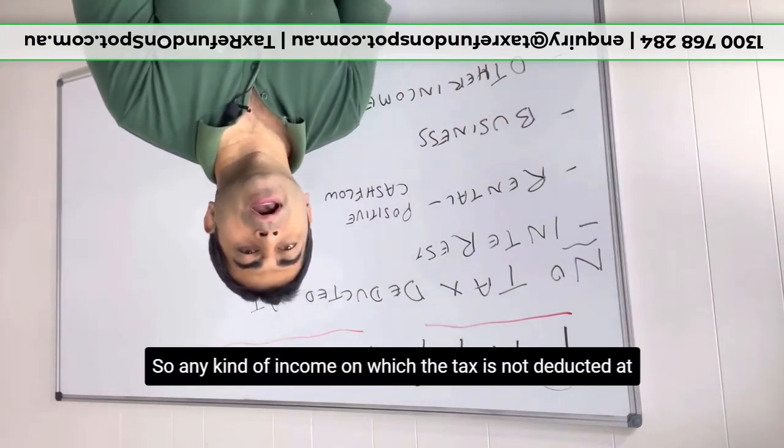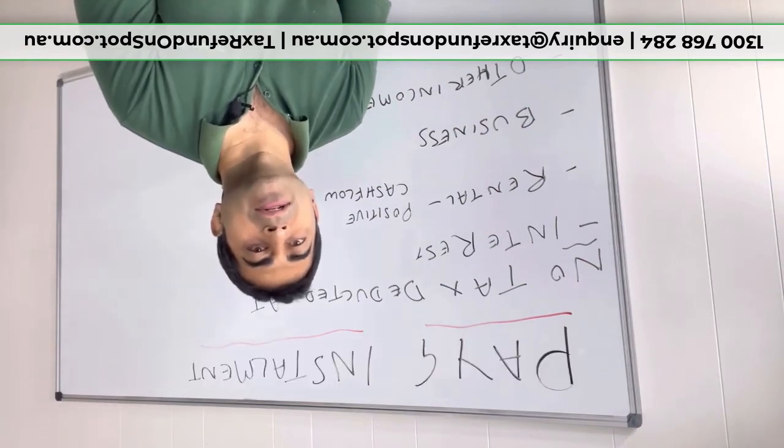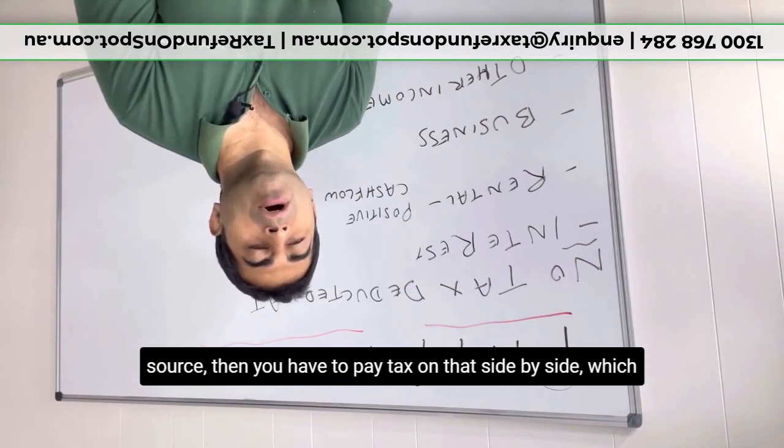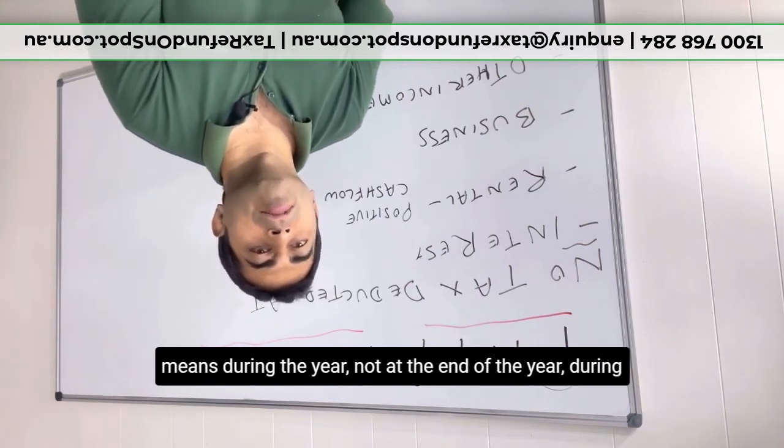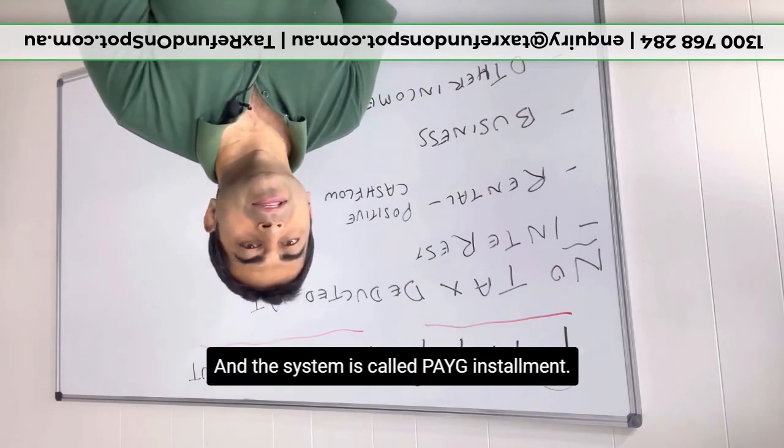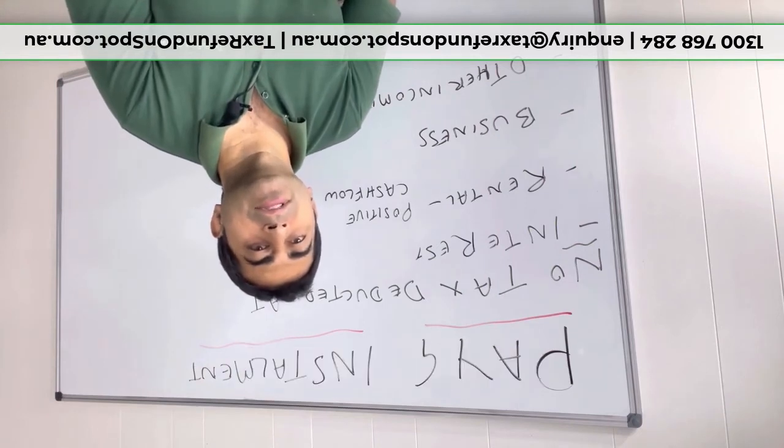So any kind of income on which the tax is not deducted at source, then you have to pay tax on that side by side, which means during the year, not at the end of the year. During the year, and the system is called PAYG installment. You will get a letter from tax office showing your PAYG installment.